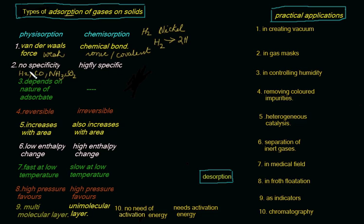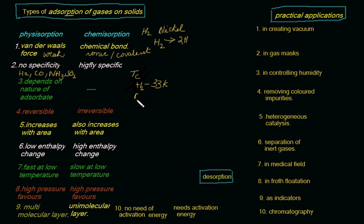Though physisorption has no specificity, it depends upon the nature of the adsorbate, specifically the critical temperature. For gases, there is a particular temperature called critical temperature below which only the gas can be liquefied by applying pressure. For example, hydrogen has a critical temperature of 33 K, methane 190 K, and sulphur dioxide 630 K.